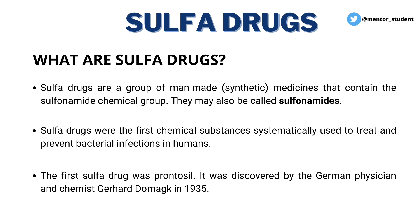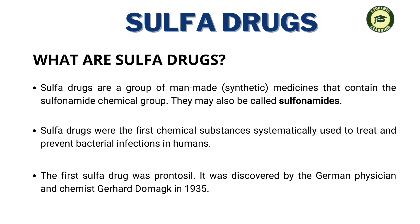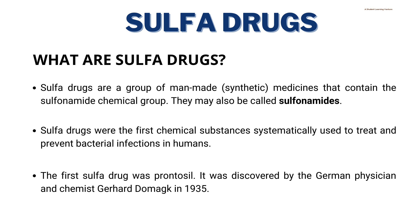What are sulfa drugs? Sulfa drugs are a group of man-made or synthetic medicines that contain the sulfonamide chemical group. They may also be called sulfonamides. Sulfa drugs were the first chemical substances systematically used to treat and prevent bacterial infections in humans. Their use has diminished because of the availability of more effective and safer antibiotics, and because of increased instances of drug resistance. Sulfonamides are still used, but largely for treating urinary tract infections and preventing infection of burns. They are also used in the treatment of certain forms of malaria.